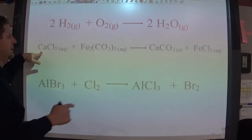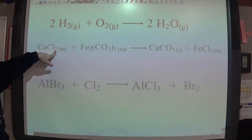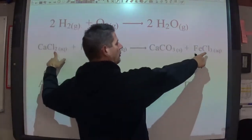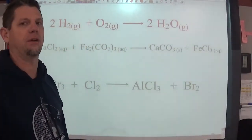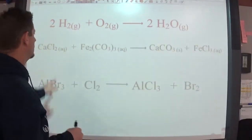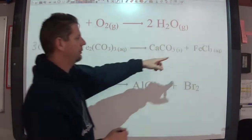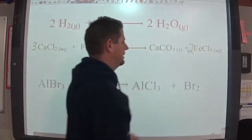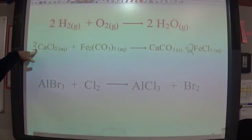So calcium and calcium are balanced. So far. I have two chlorines on the left but I have three chlorines way over here on the right. The first time chlorine will be equal to each other is going to be at six. So two times three gives me six. And three times two gives me six. So now the chlorines are balanced.